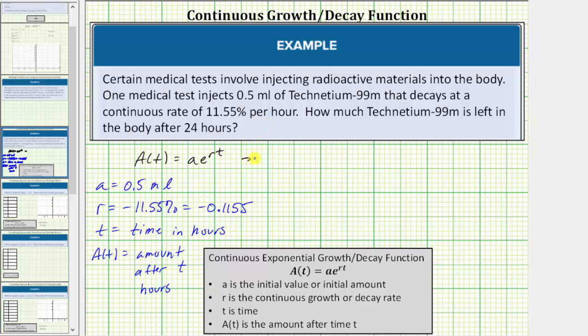Our function is A(t) equals a, which is 0.5, times the base e raised to the power of rt, which is negative 0.1155t.